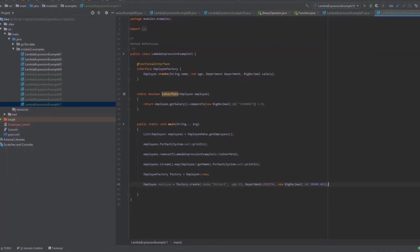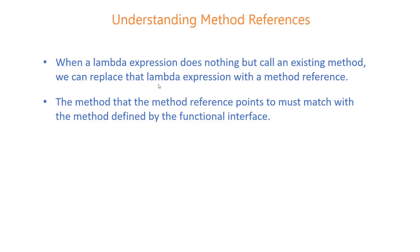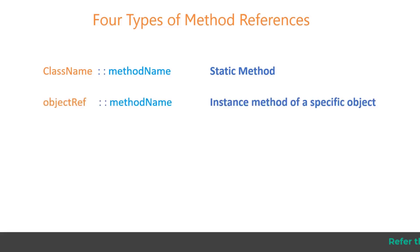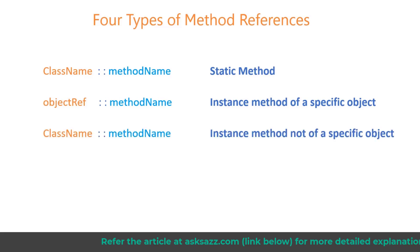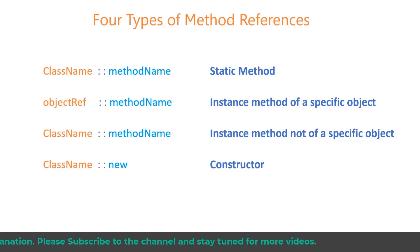So those are the four types of method references. To summarize: when a lambda expression does nothing but call an existing method, we can replace that lambda expression with a method reference. The method that the method reference points to must match with the method defined by the functional interface. For a static method, the method reference consists of a class name, double colon, and the name of the method. For instance methods there are two types — a method reference to an instance method of a specific object has the reference to the object before the double colon; a method reference to an instance method not for one specific object has the class name before the double colon and the method is called on what would be the first parameter of the lambda expression. Finally, a method reference to a constructor has the class name before the double colon and the keyword new after the double colon.